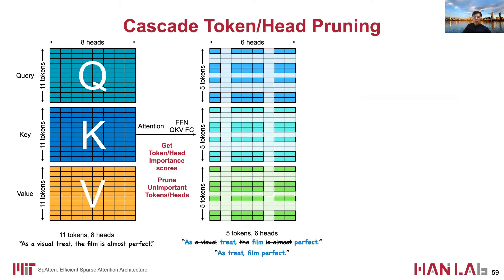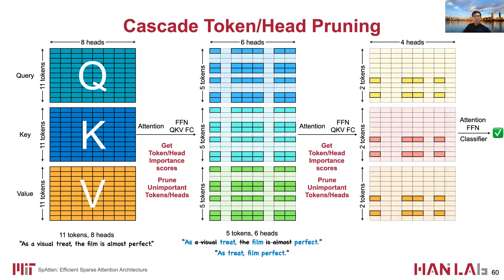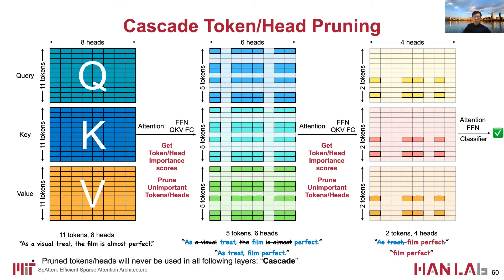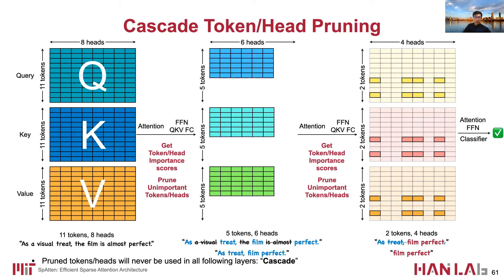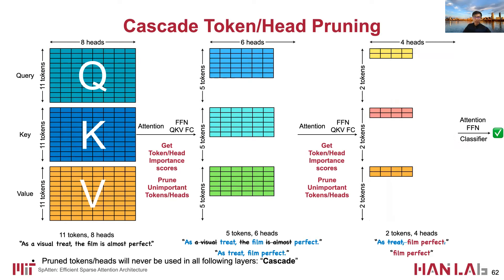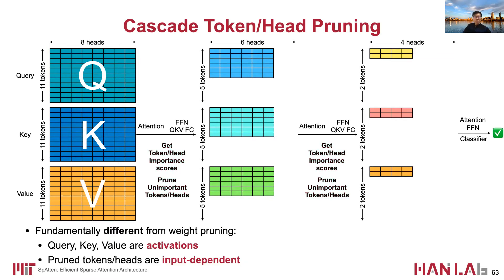This corresponds to removing tokens and heads as in the previous example. Similarly, for the remaining tokens and heads, we evaluate their importance after layer 2 and prune them away, corresponding to the remaining 2 tokens and 4 heads. During this process, pruned tokens and heads are never used in all following layers — thus it is called cascade pruning. It helps reduce computation and memory access because we only need to fetch and process the remaining tokens and heads. Note that token and head pruning is fundamentally different from weight pruning, because QKV are activations, not weights, and pruned tokens and heads are input-dependent.